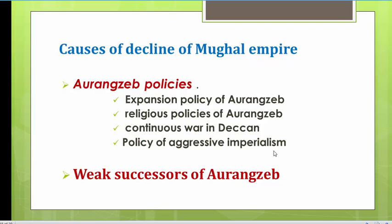One of Aurangzeb's policies was his expansion policy. He expanded his empire to such an extent that he could not control it effectively — like an over-inflated balloon. He had no means of effective communication; when he stayed in the Deccan trying to control it, he was not able to control the north, and vice versa. This excessive expansion only weakened the center, and its vastness tended to weaken overall control.